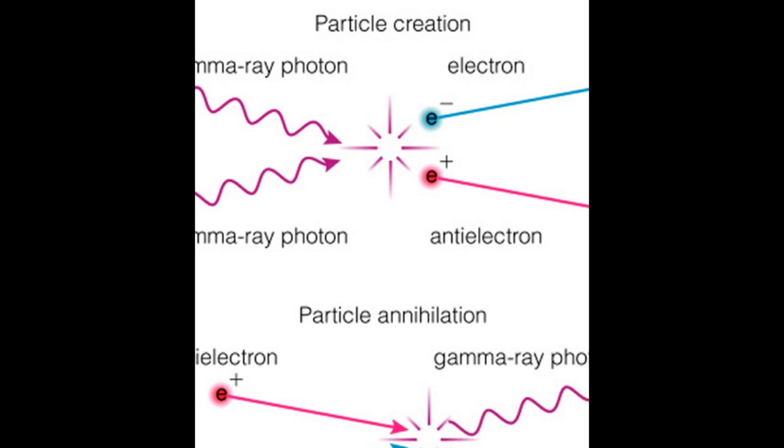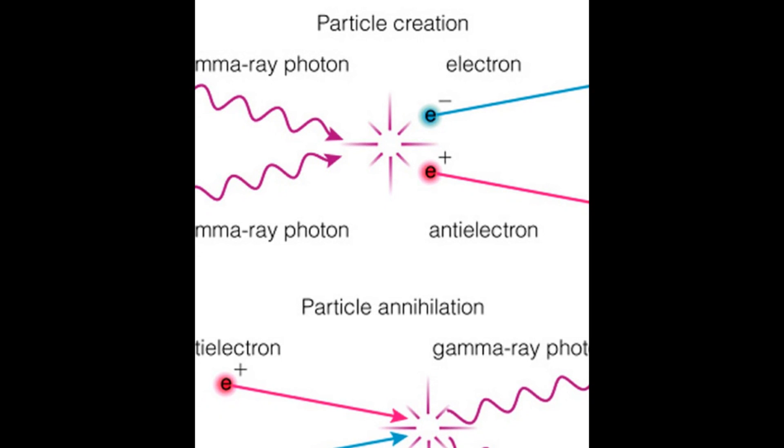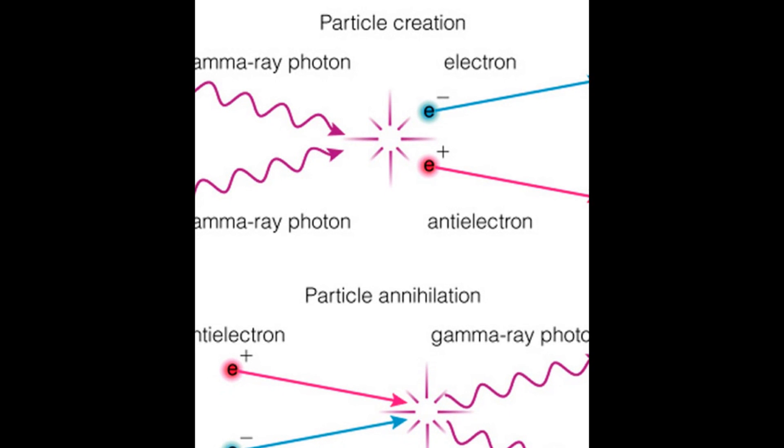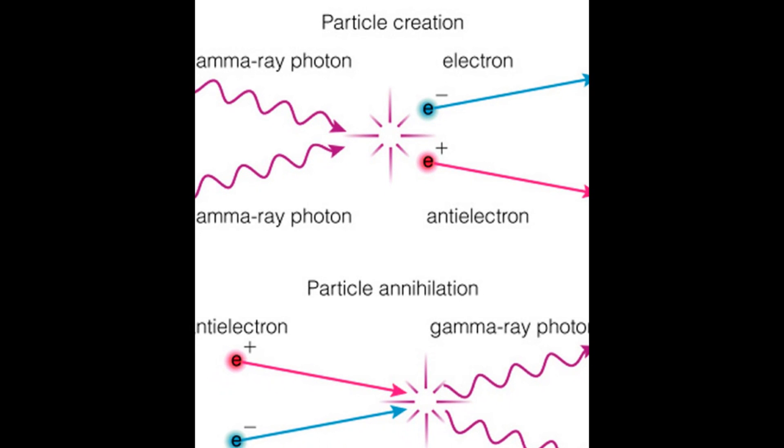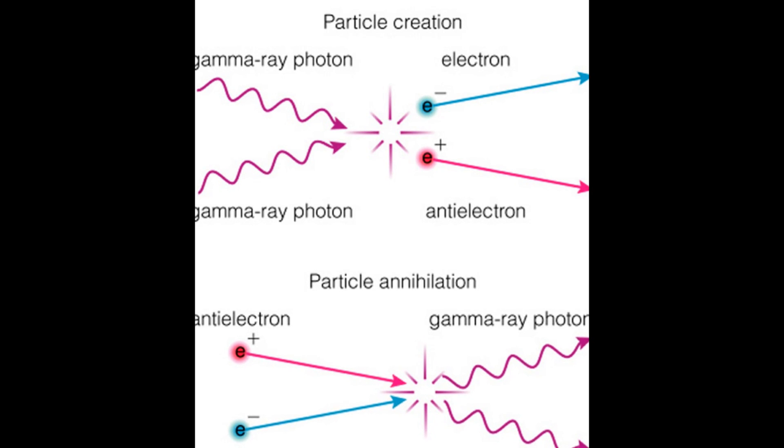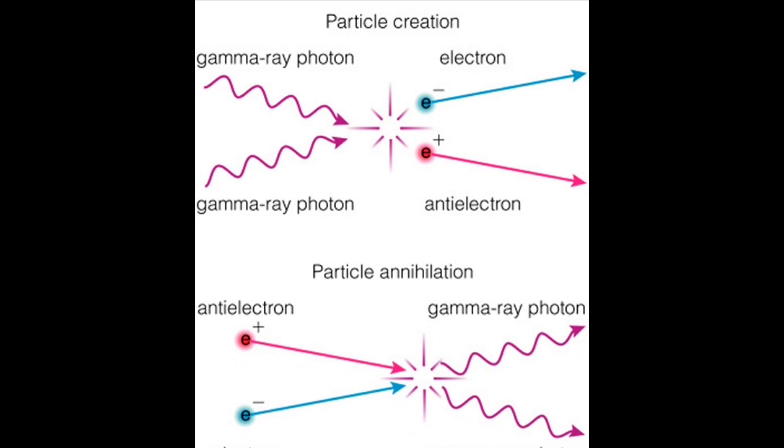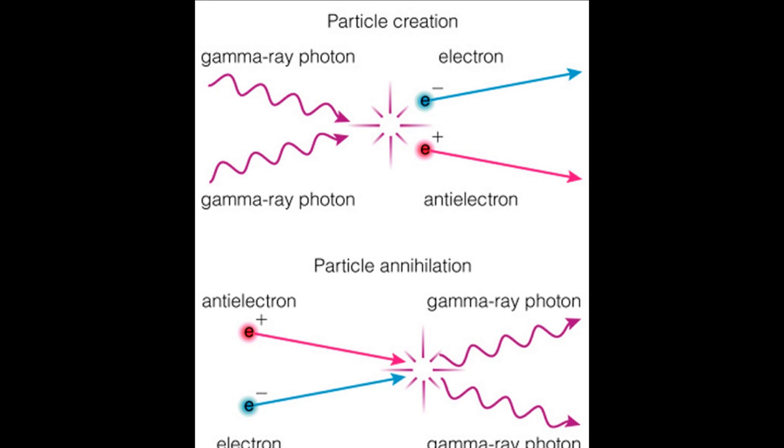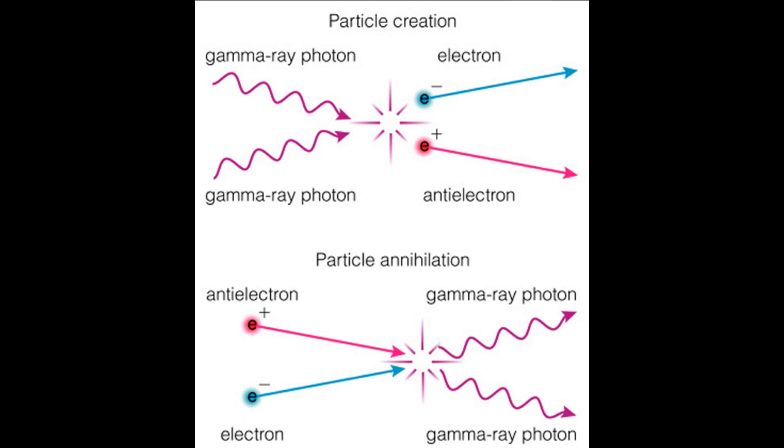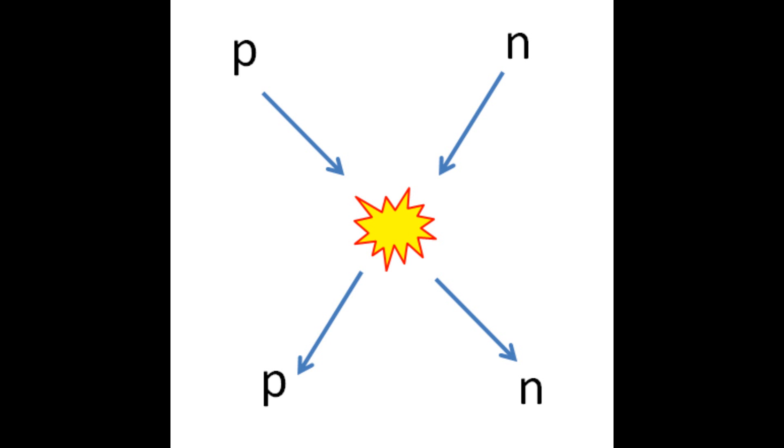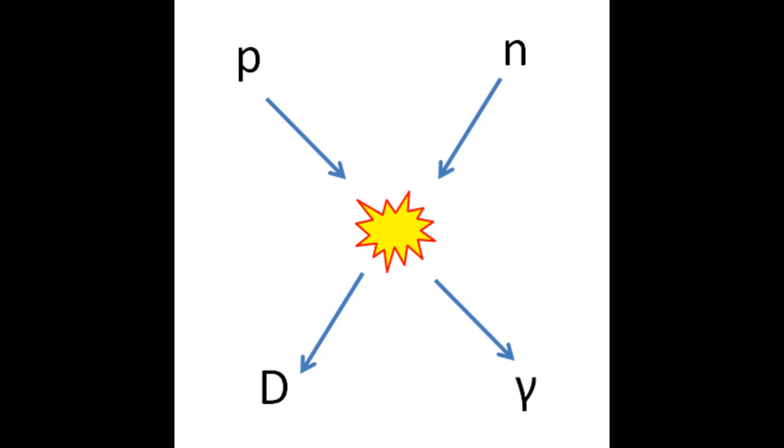All of the positrons that were created at earlier times found an electron to annihilate with. However, there were about 1 billion and 1 electrons for every 1 billion positrons. So after all of the positrons had annihilated, there were some electrons left over. This event is called electron-positron annihilation. At this time, the temperature was too high for protons and neutrons to stick together into atomic nuclei. But by 366 seconds after the Big Bang, the temperature dropped to 697 million Kelvin, and protons and neutrons could collide and combine into deuterium.